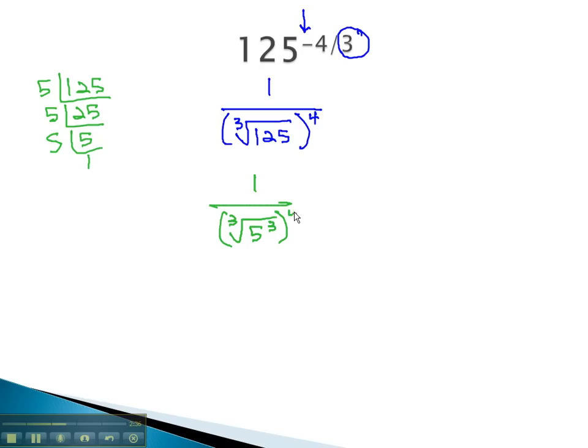Cube root and cube are inverses. We're left with just the 5 to the 4th power. Finally, to finish this problem off, we can calculate 5 to the 4th is 625. And our final answer for 125 to the negative 4 thirds is 1 over 625.